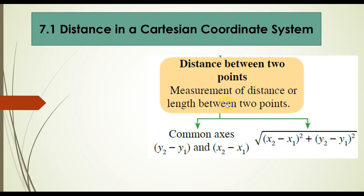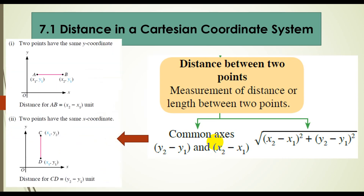Jarak di antara dua titik. So, ada two formula. Okay, first, formula for common axis. Common axis tu apa? Common axis means two points have the same Y coordinates or X coordinates.